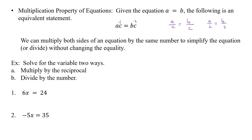What we're going to do here is solve for the variable in two ways. First, we're going to multiply by the reciprocal, and then we're going to divide by the number. So we start with 6x equals 24, and we want to solve for x. The number out in front is 6, so the reciprocal is 1 sixth. So we're going to multiply by 1 over 6.